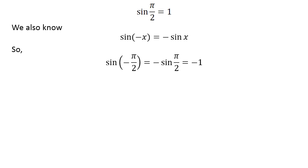So, sin(-π/2) = -sin(π/2) = -1. As -π/2 lies in the closed interval [-π/2, π/2], -π/2 is the principal value of sin⁻¹(-1).